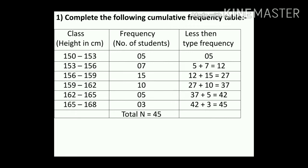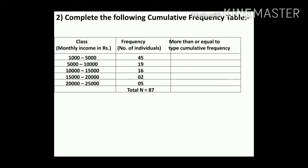Now move to the next table: complete the cumulative frequency table for monthly income in rupees. The third column required is more-than-or-equal-to type cumulative frequency. For this type, we subtract the frequencies.